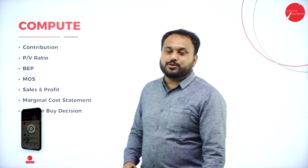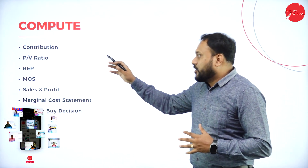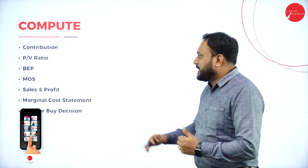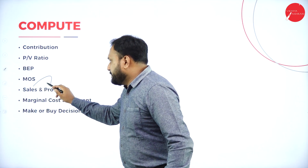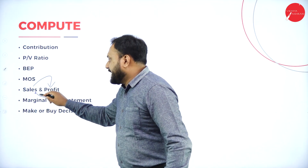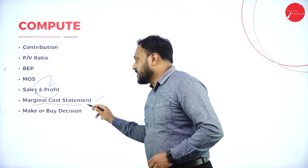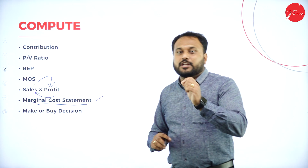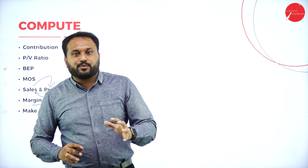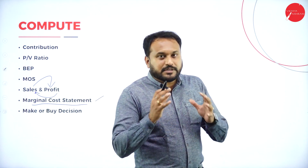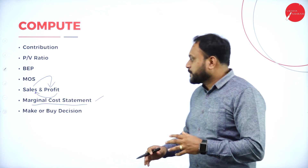Whenever you go with anything, they'll always ask you to compute — that means calculate. They may give you contribution, PV ratio, BEP, MOS, sales and profit. That means: sales is given, find profit; profit is given, find sales. Then there's the marginal cost statement. This is a chapter where you can actually score more, so never leave this chapter — it is very easy compared to all others.